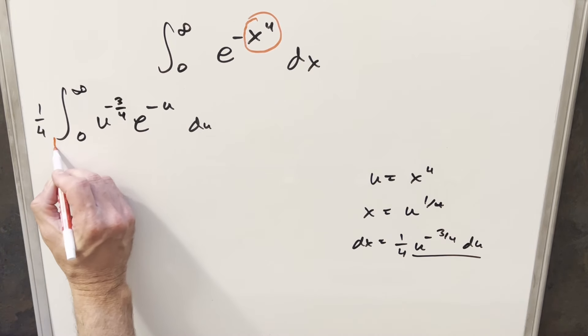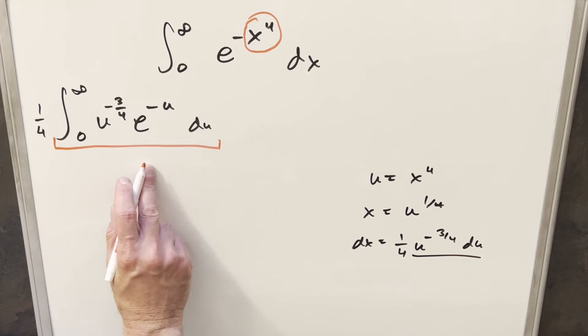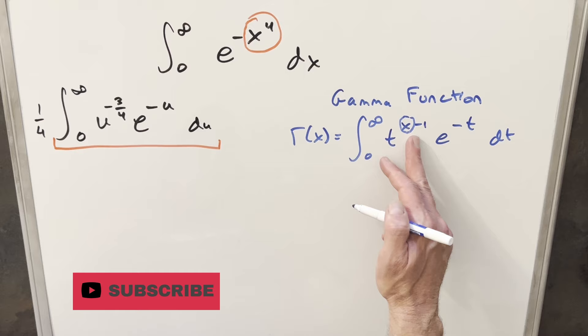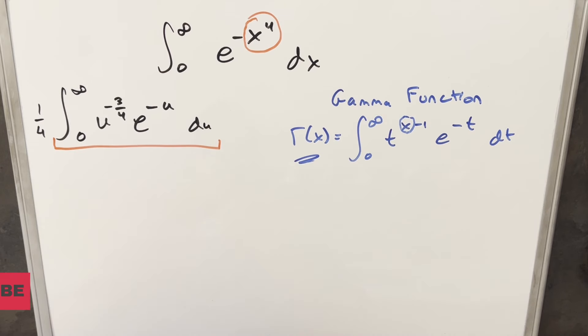But now for this thing here, this is perfectly set up to use the gamma function. So we have our formula for the gamma function over here. It's a little confusing with the variables, right? The integral is with respect to t. And then our input into the gamma function is x. So actually, whatever this value is here on the exponent, whatever the value is that we have here on the exponent of the t, that's going to be our value for the gamma function.